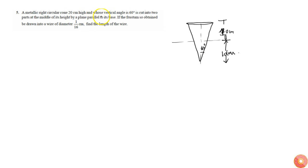The frustum so obtained can be drawn into a wire of a certain diameter. Find the length of the wire. So this is a metallic body.